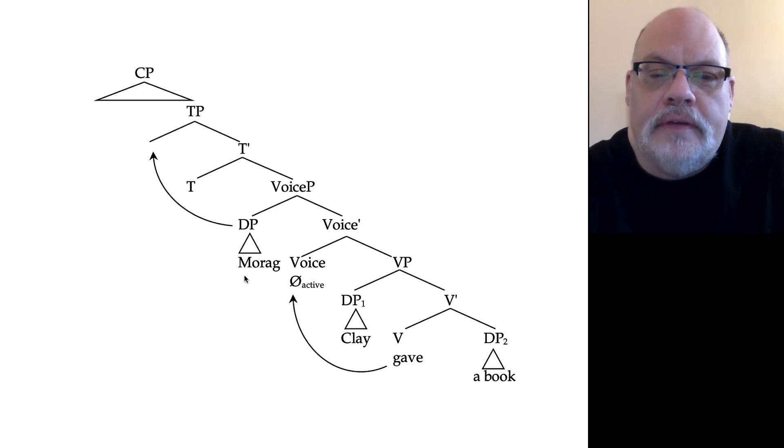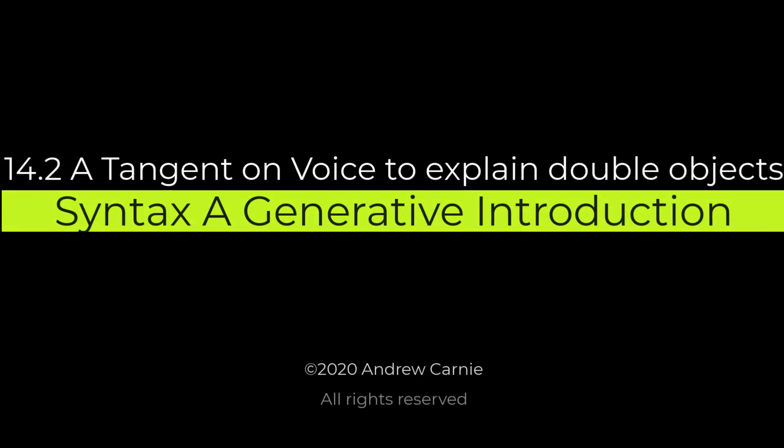Now, there's one more thing here. It's something that should be familiar to you from before. We move the DP from the internal voice phrase specifier position into the specifier of TP for case and EPP reasons. So that's how we get the correct order in double object constructions. By making use of our voice phrase and our VP structure, the main difference is our VP structure has an element in its specifier, which is the goal.